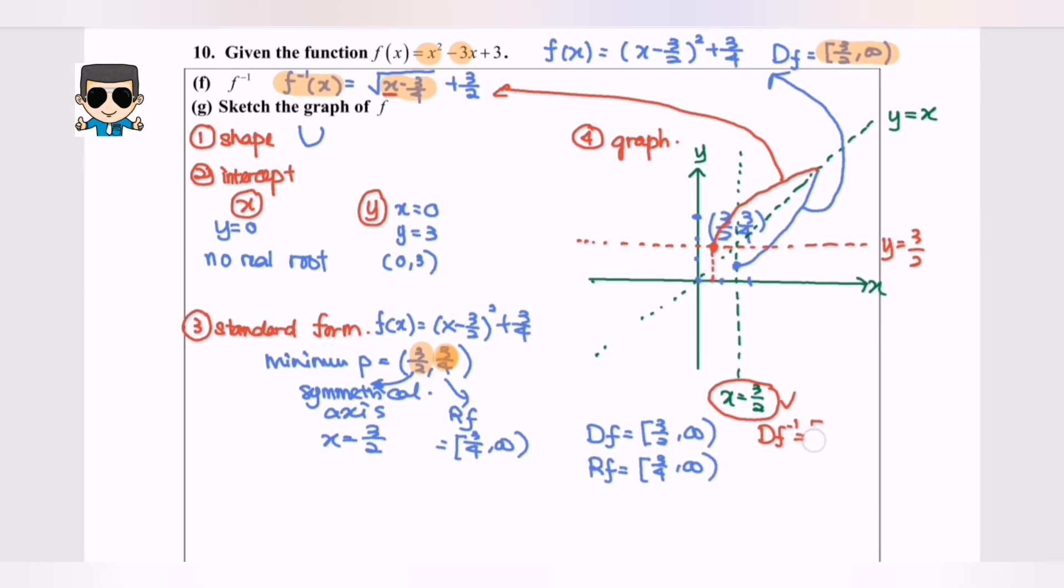The range for F inverse, we need to refer to the value of Y. So the minimum value of Y is 3 over 2 until positive infinity.